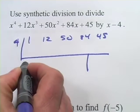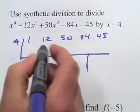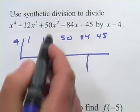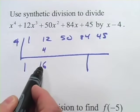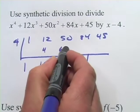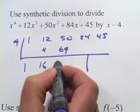And then the first step is to bring the 1 down, multiply, and put it in this column, so that's 4. And then we add down the column, we get 16. Multiply that by 4, and put it up here, we get 64. And that's 114.